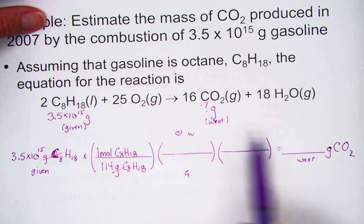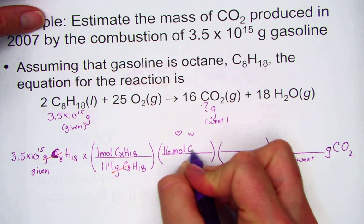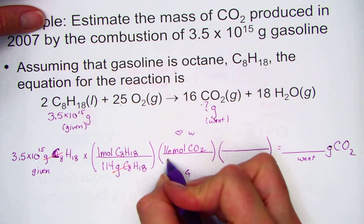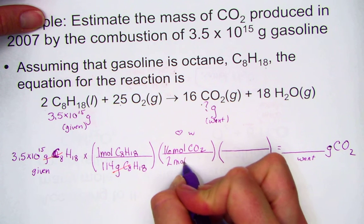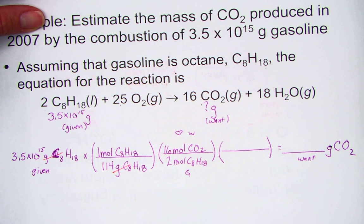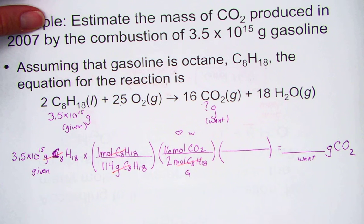We're ready for the ratio, our want over given. We want to know carbon dioxide. Its coefficient is a 16. Given the ratio of octane has a 2. By setting up our want over given ratio, we've now canceled the mole unit for octane.